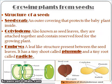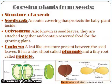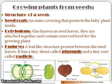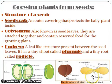Growing plants from seeds: It is very important to know about the seed's structure. The seed coat is an outer covering that protects the baby plant inside. Cotyledons, also known as seed leaves, are attached together and contain reserve food for the growing plant. You can see in the picture there are two cotyledons. Micropyle is a hole through which the seed absorbs water. A small greenish leaf-like structure is present between the seed leaves — it is called the embryo. This embryo has a tiny shoot called the plumule and a tiny root called the radicle. You can see these parts in the given pictures.